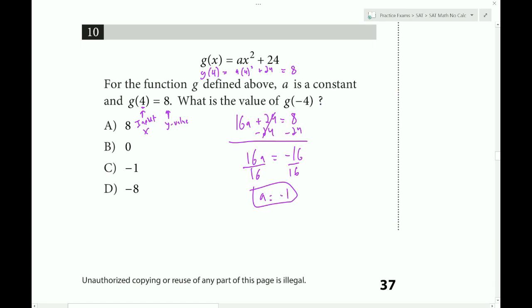Wait a second. So we should always check, and this is a good habit to develop. As you're circling your answer, always check to make sure you're answering the right question. And in this case, they are not asking for A, but rather G of negative 4. So now that we've found out what A is, G of X would equal negative 1 times X squared plus 24.